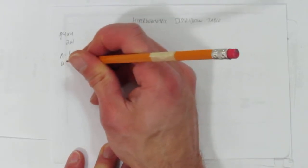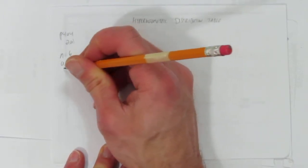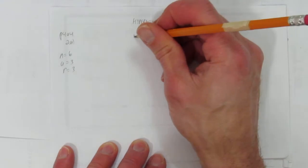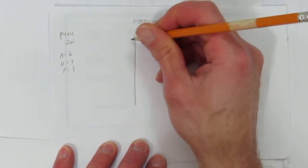And n equals 6, a equals 3, and r equals 3. It's pretty tricky to get all those numbers straight in your head. Well, let's start by setting up the table and then we'll go over what those mean.